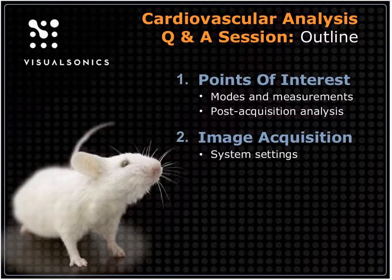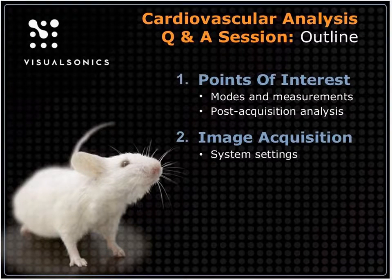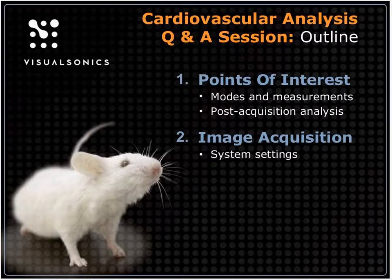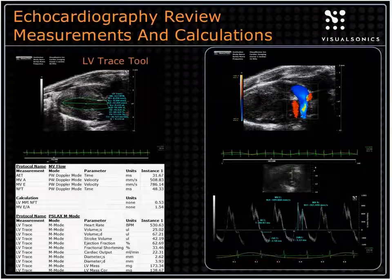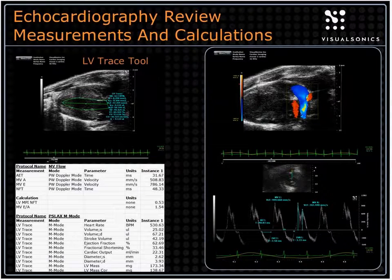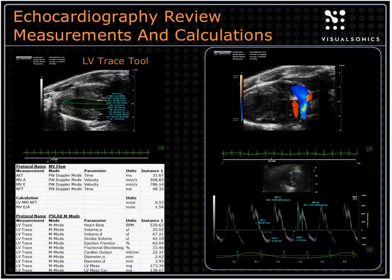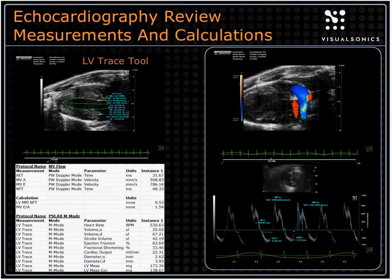We'll do a quick overview and then move into the actual VIVO software to look at some cardiovascular images. Please put questions in the chat as we go. We have a few questions submitted previously at registration that we'll try to answer first, then we'll play it by ear. Starting with a basic overview just to get everybody on the same page — what the VIVO 2100 system is, what it does, and what it can do in terms of cardiovascular imaging.